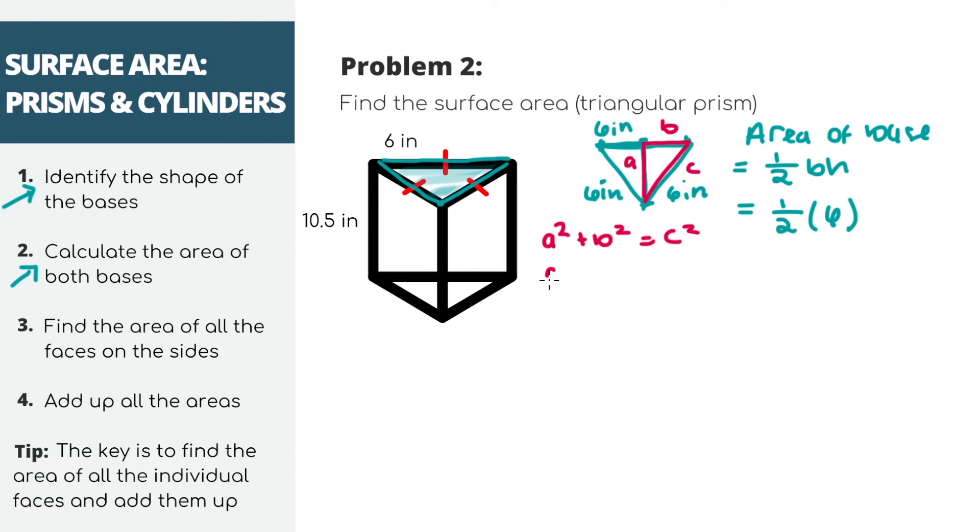Plugging in all the numbers, we're trying to find a, b equals 3 since this is half of 6, and c is 6. Solving for a, we'll get that the height is the square root of 27.